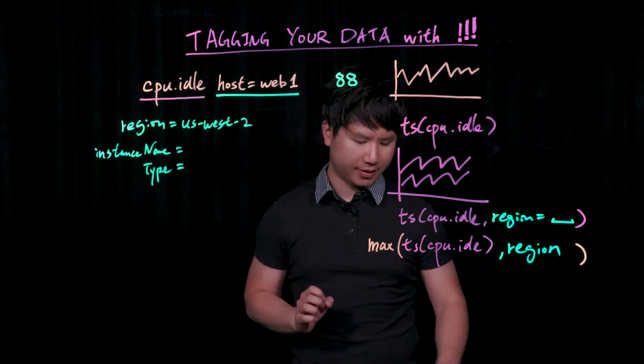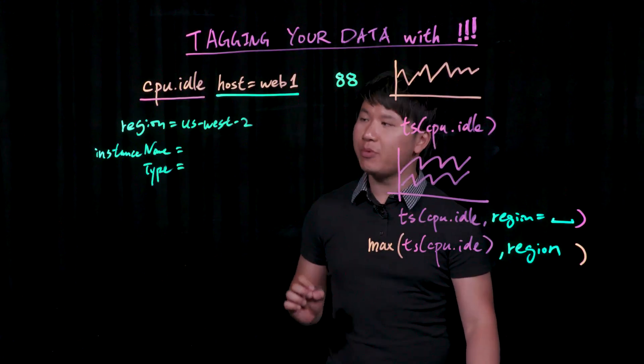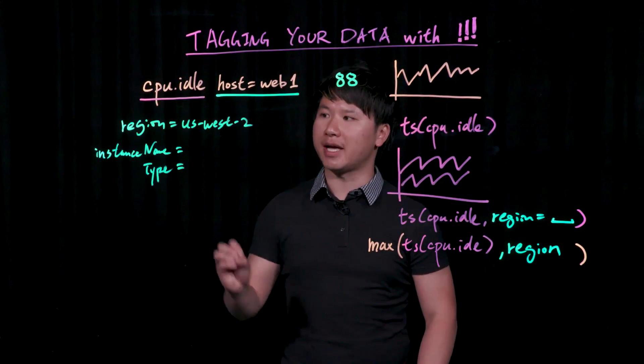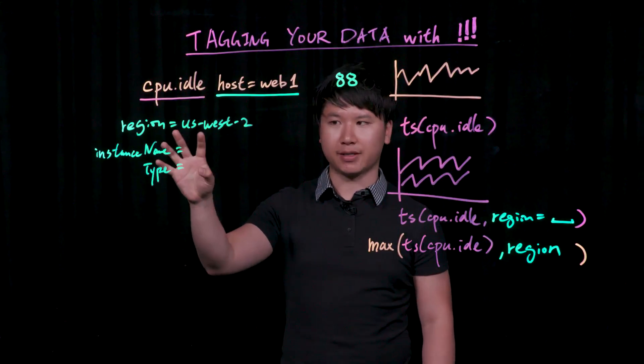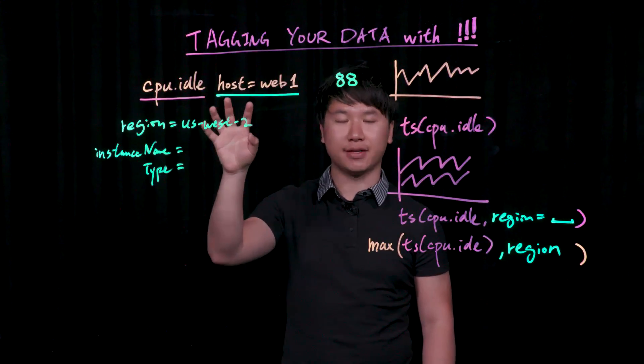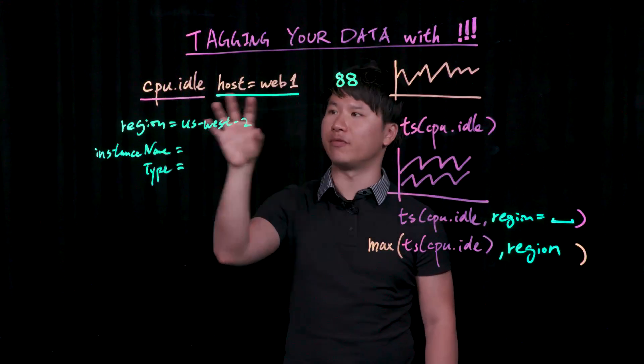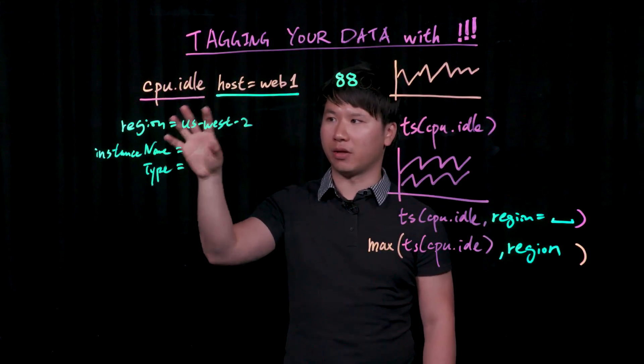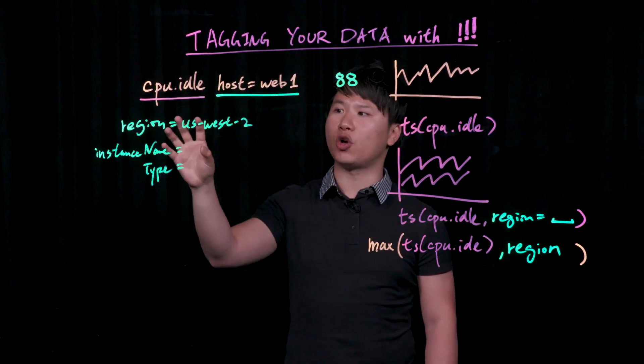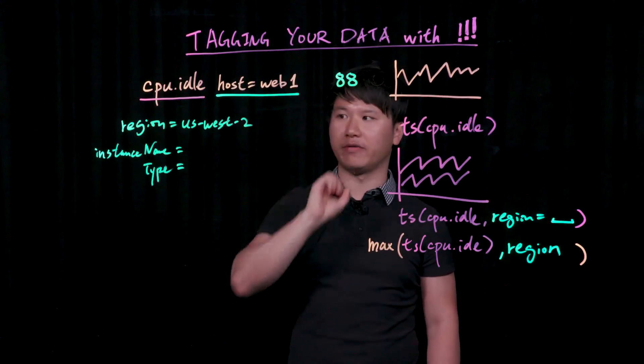Now, the primary differentiation between the two is that dimensions, or point tags, are attached to the metric as it is reported. You actually send this metric directly to Wavefront, whether it's the proxy, or whether via direct ingestion, and it's almost like these dimensions are part of the value itself.